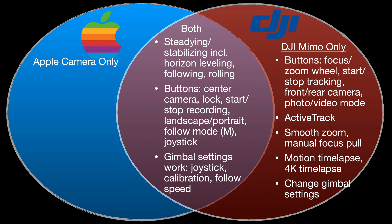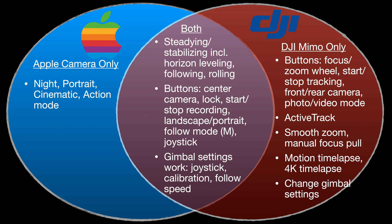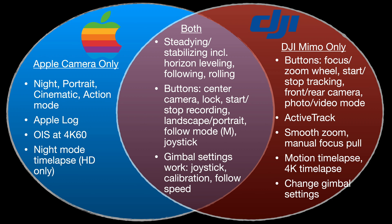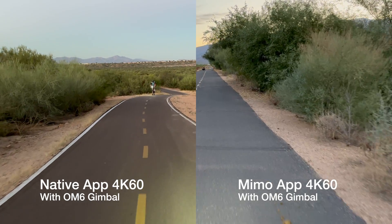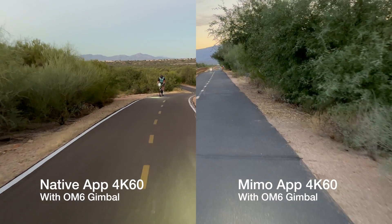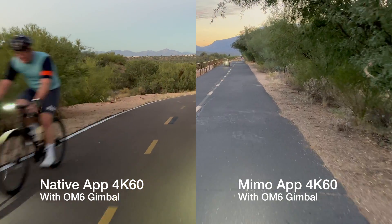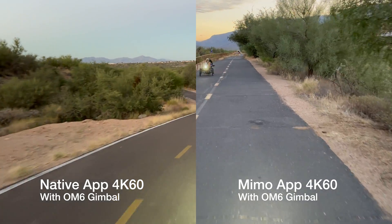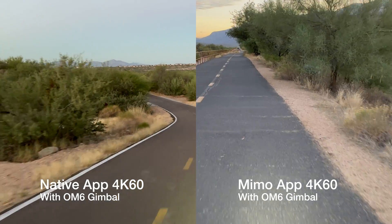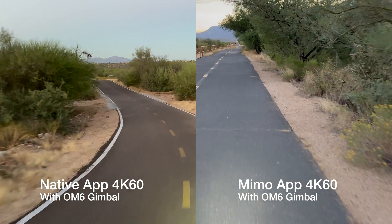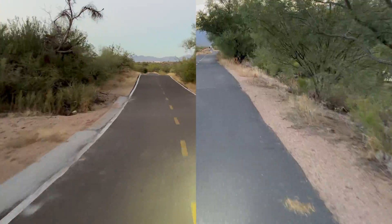The Meemo app cannot do everything the native app does. Cinematic and action modes are not implemented in Meemo and may never be, nor is filming in Apple Log on the iPhone 15. Critically, the video image stabilization, particularly at 4K 60, is far superior in Apple's app than it is in Meemo.